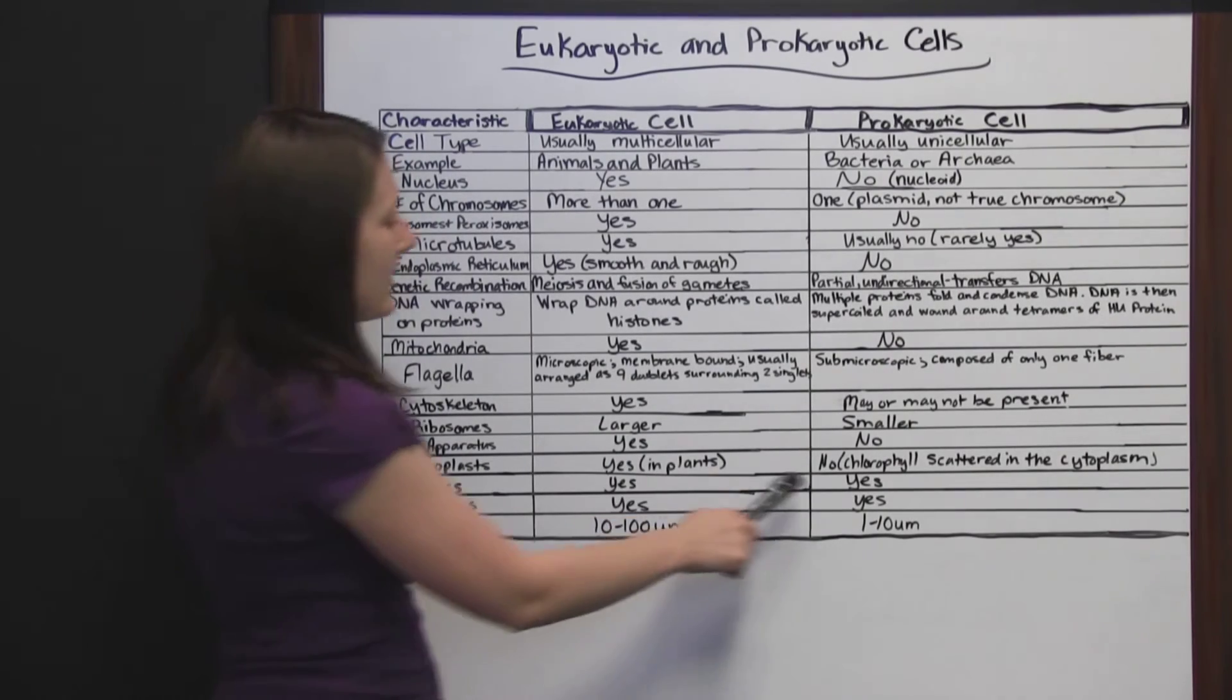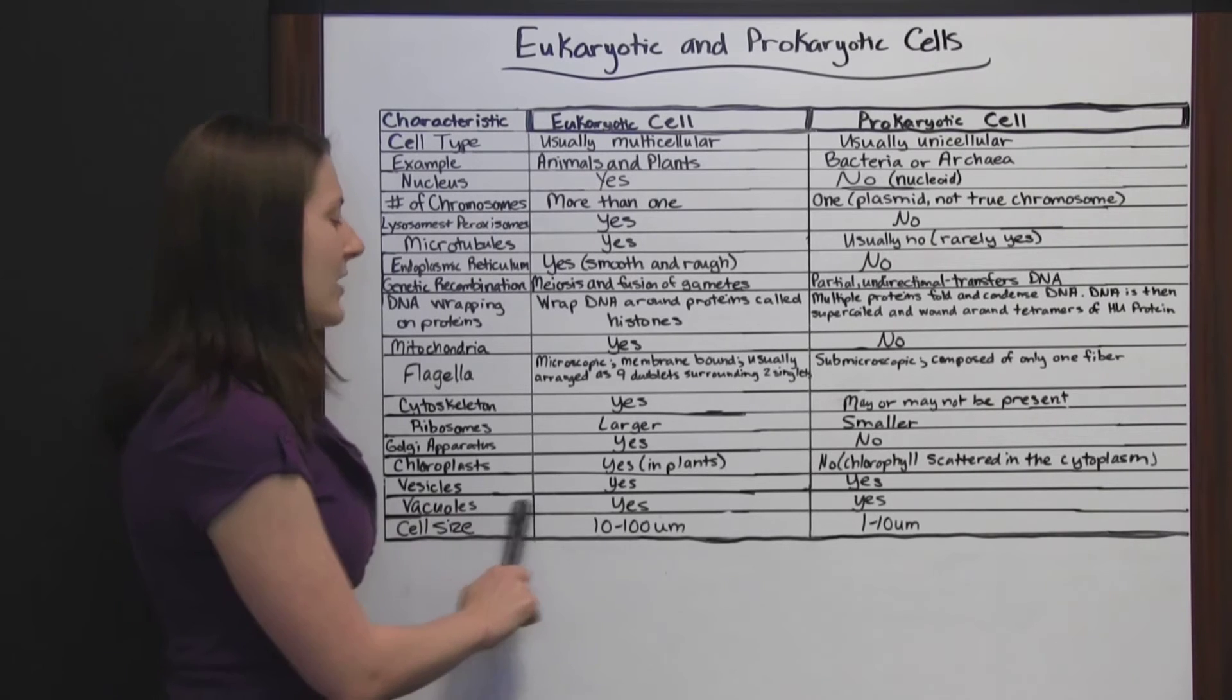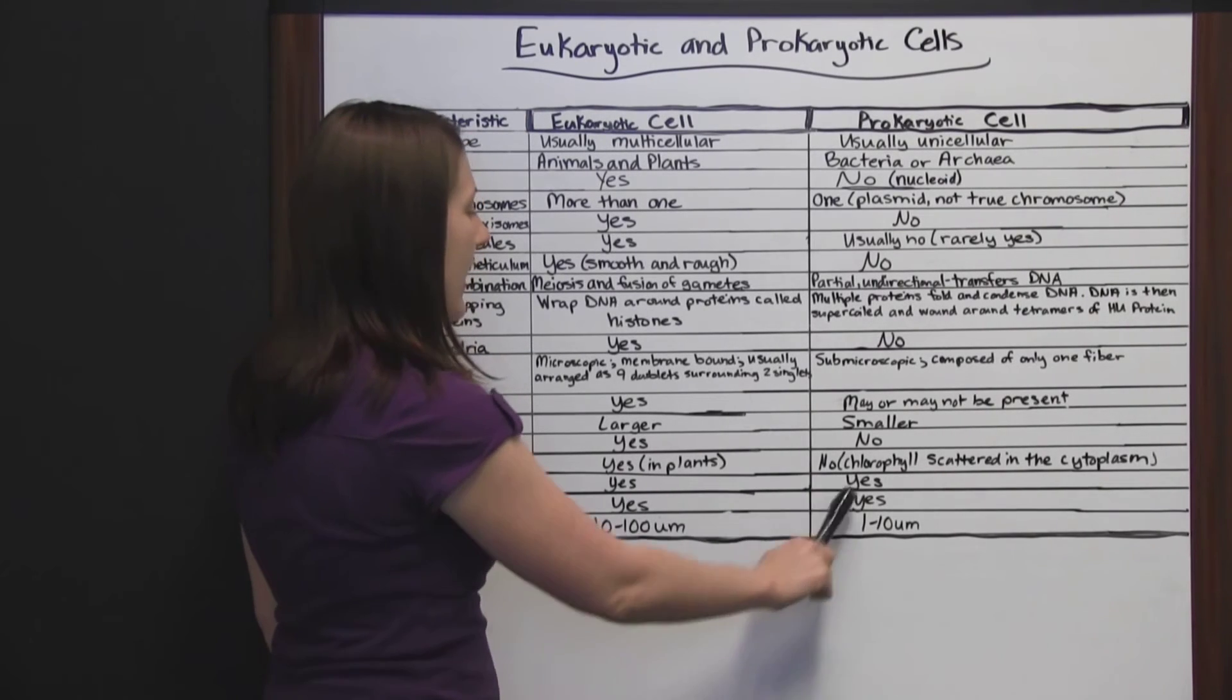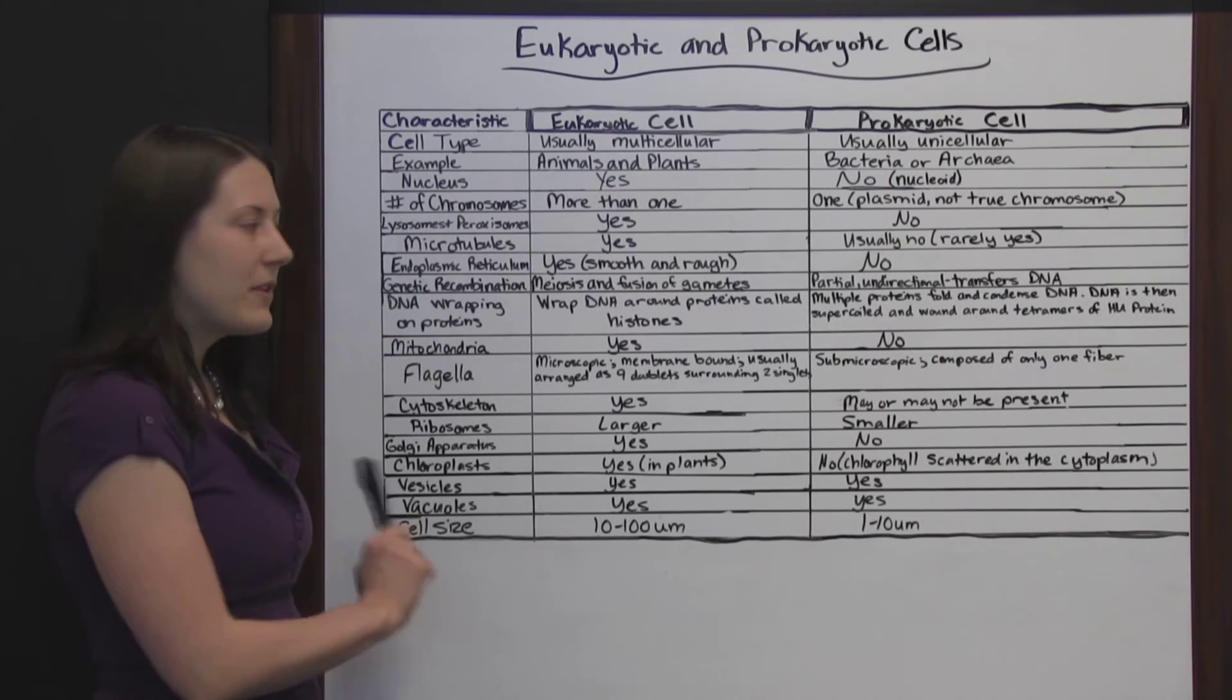Vesicles. Yes, in both the eukaryotic and prokaryotic cells. And vacuoles. Yes, in both. Here's what they have directly in common, that they both have vesicles and both have vacuoles.